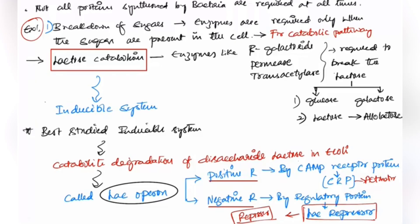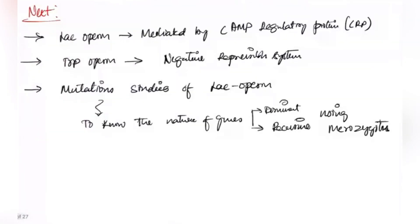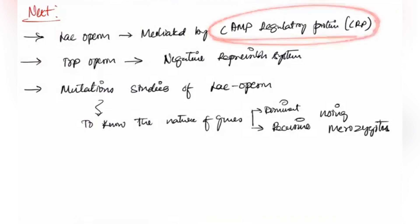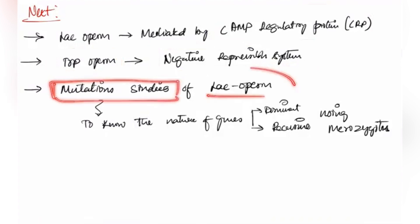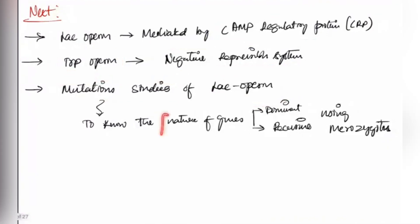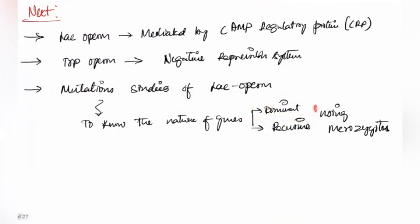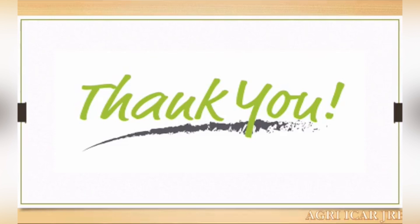In the next class, we will discuss the lac operon mediated by cAMP regulatory protein, the tryptophan operon and its negative repressible regulation, and mutation studies using merozygotes to determine the dominant or recessive nature of lac operon genes. Updates will be shared in the group. Thank you for attending.